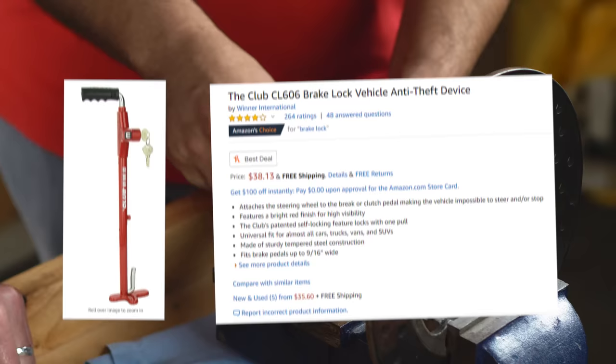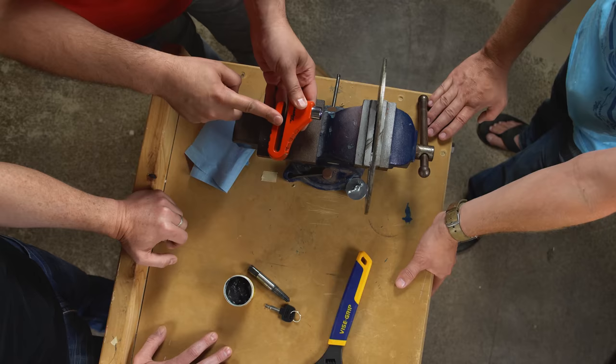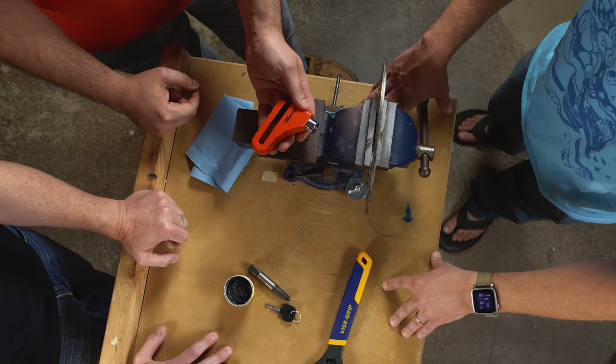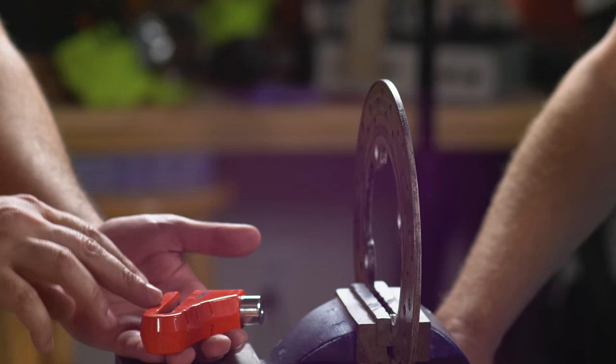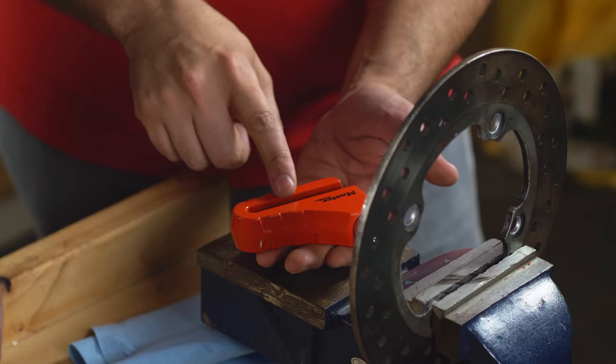So it's like the club, but for your brake disc. Exactly what it is. And like the club, this has some problems. I mean, it's got a lock on it, so I have a feeling I know where this is headed. I know how this ends. The lock is one thing, but it's the body of this that's the main issue here.